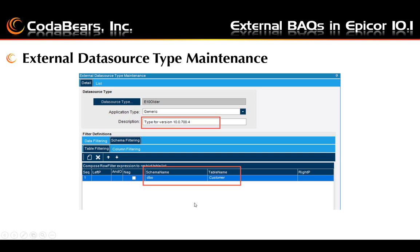Data filtering will be the highest level — for example, only show tables for the current company — and this filter can be applied to any or all tables in the data source. Next you can use the schema table filter to limit which tables are available from the external data source. Similarly, you can use column filtering to determine and limit which columns are available from the external data source in your business activity queries.